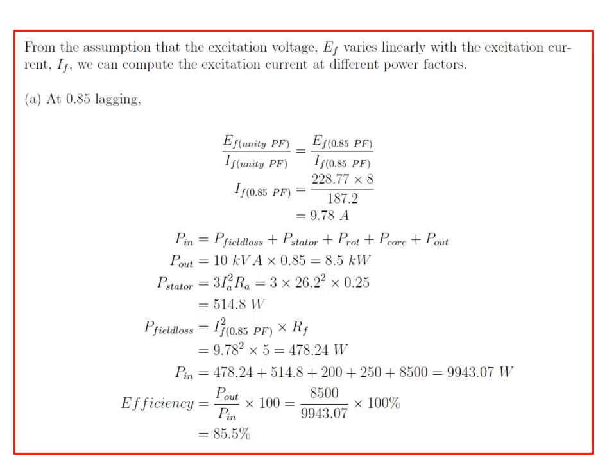Using the linear ratio of field voltage to field current at unity power factor, we find the required field current is 9.78 amps. We can then calculate the input power as the field loss plus stator, core, and output power contributions. The output power is 10 kVA × 0.85 = 8.5 kilowatts. Plugging all values together, the efficiency for the generator operating at 0.85 lagging power factor is 85.5%. This is also solved in the homework solutions provided.